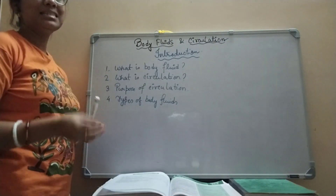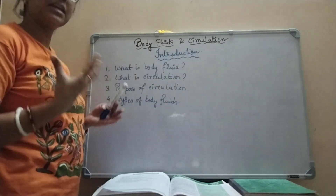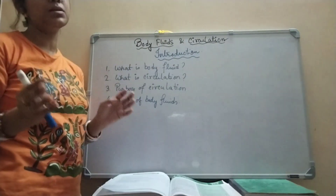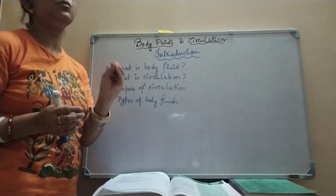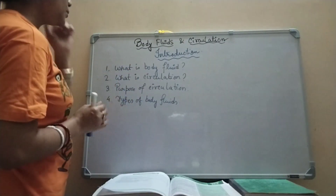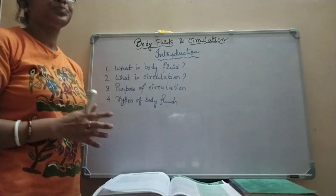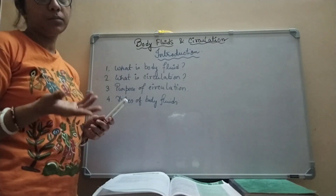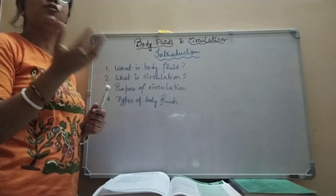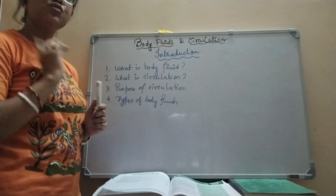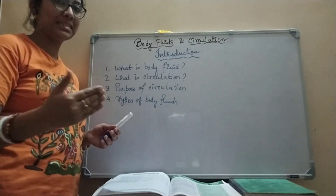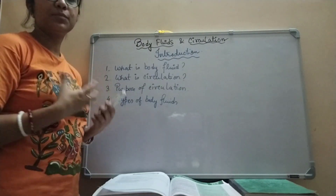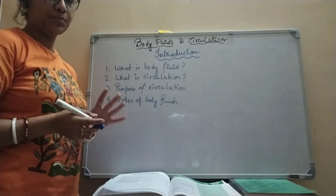Body fluid is the liquid medium of transport, the medium of circulation, present in different animals — not only human beings, but in different animals starting from very minute animals like protozoa. There are various elements produced by our body, and we also receive many elements from the environment. To transport these elements — whether waste products to eliminate from the body, or oxygen for respiration — body fluid is a very mandatory part.